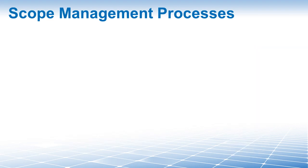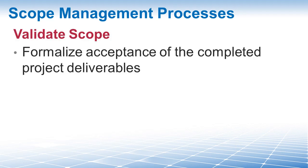Moving on to the last two processes in project scope management — both about monitoring and controlling. The first: Validate Scope. This is the process of formalizing acceptance of the completed project deliverables. You review the deliverables with the client to be sure they are satisfied and will formally accept them. You will inspect the deliverables before presenting them by measuring, examining, and validating that they meet all requirements — also referred to as reviews, product reviews, audits, or walkthroughs. Once the client formally signs off, you forward the documents to the close project or phase process. If there are issues of non-acceptance, you will be dealing with change requests for defect repair or alterations.